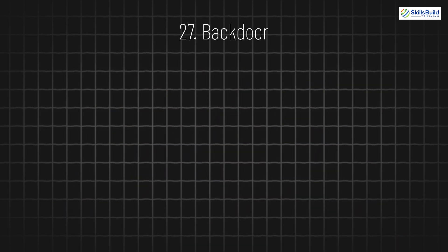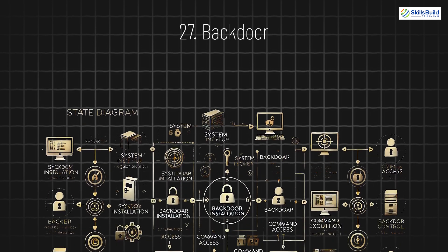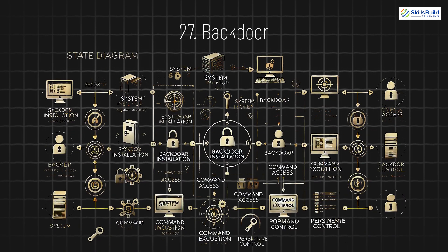27. Backdoor. A backdoor is a hidden entry point into a system that bypasses regular security measures. Hackers use backdoors to gain unauthorized access without triggering alarms, allowing them to control the system at will.